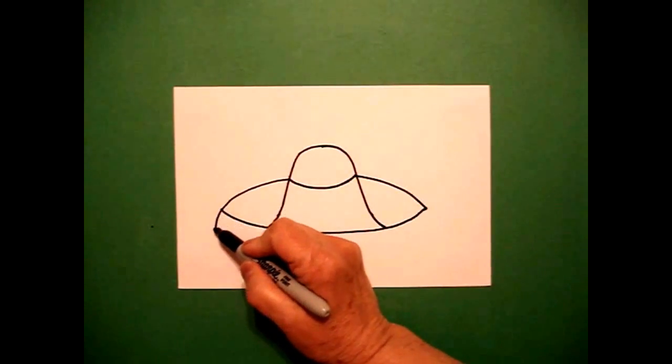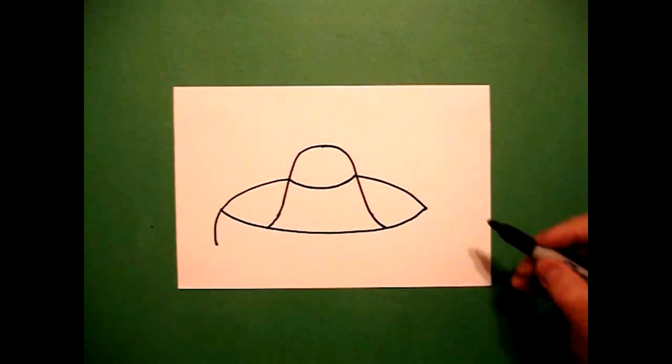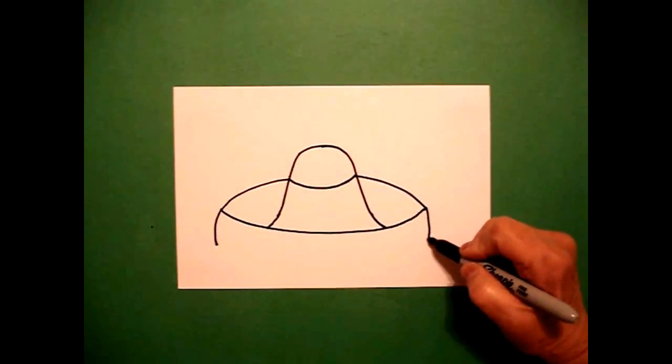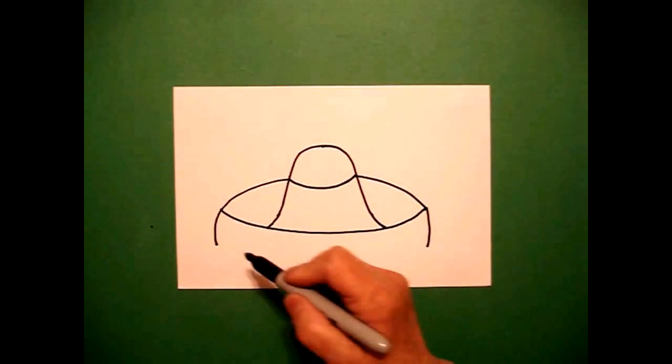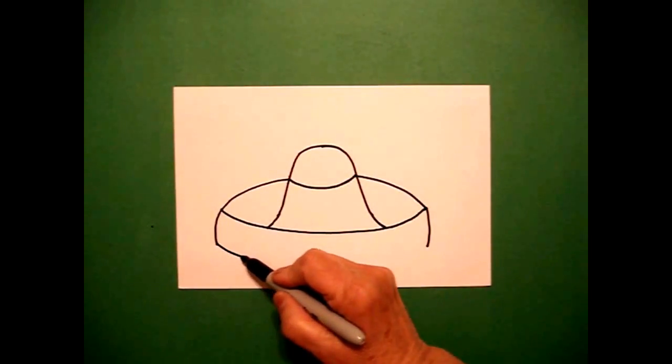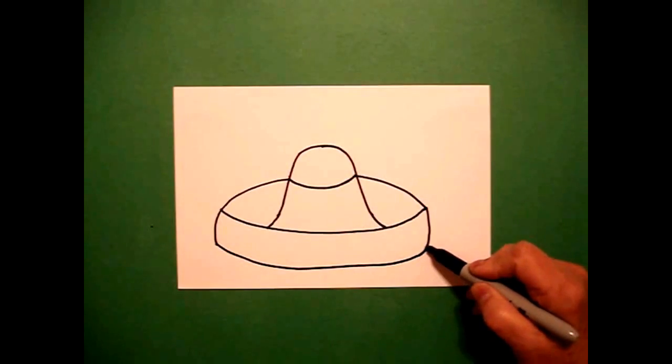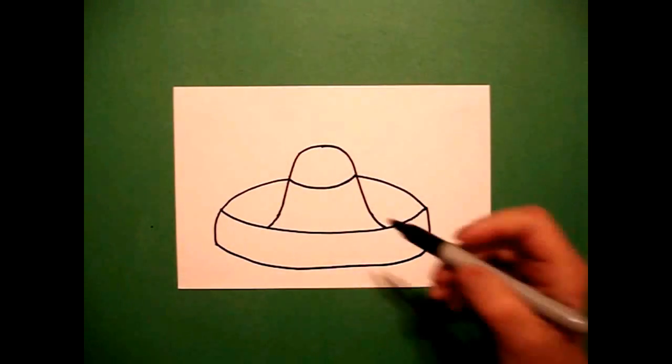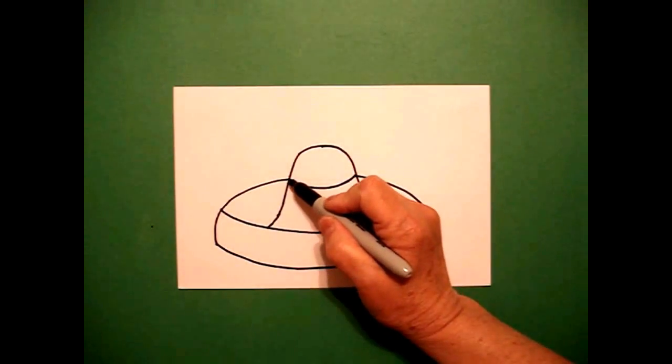I go back to the left and I draw a slightly curved line down on the left, slightly curved line down on the right, come back to the left, draw a big curved line all the way over, connect.